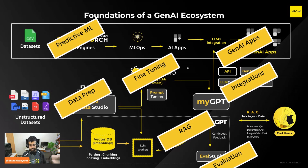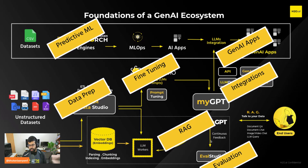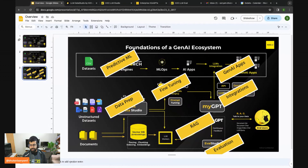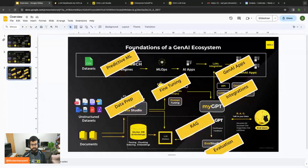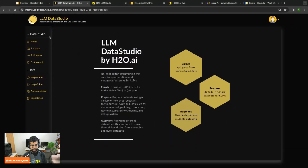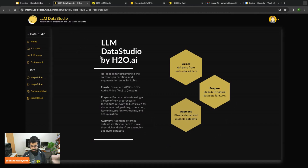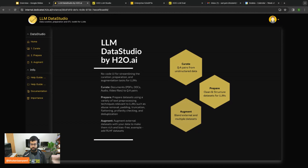Just to put a label on everything: Data Studio is where your data preparation happens. LLM Studio helps you fine-tune. Enterprise H2O GPT lets you perform RAG over these. And we also have Eval Studio that lets you evaluate all of these models. So in that sense, this becomes a complete GenAI ecosystem — you can go from zero to GenAI. Let's quickly refresh our memory. We'll start with LLM Data Studio, which lets you curate, prepare, and perform ETL for LLMs — curate, prepare, and augment.